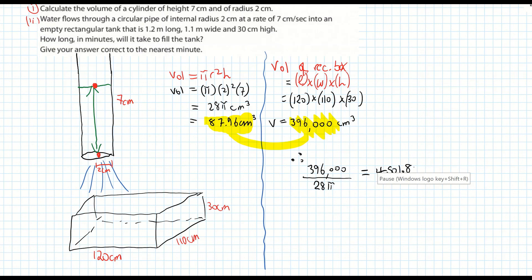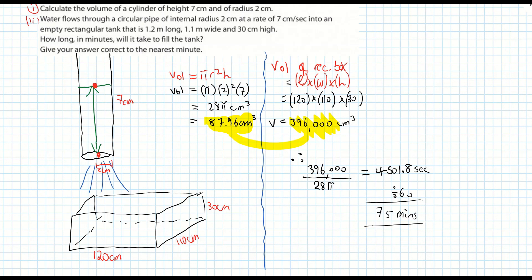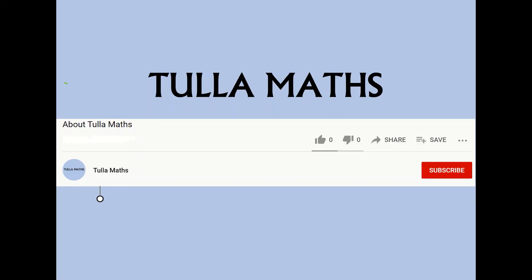Dividing gives 451.8 seconds. The question asks for minutes, and there are 60 seconds in one minute, so dividing by 60 gives 75 minutes. To recap: find the volume of the cylinder per second — that small portion of the pipe — then find the volume of the empty container and divide the two answers. Thank you for watching another tutorial video from Tullamaths. Make sure and subscribe.